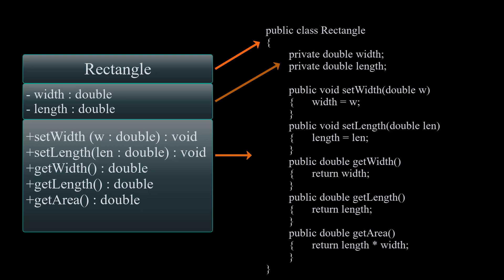As we talked about a couple of slides ago, we covered setters and getters. And then finally, we're calculating the area of our rectangle, which we have as public double getArea. This is the method that calculates the area of the rectangle.